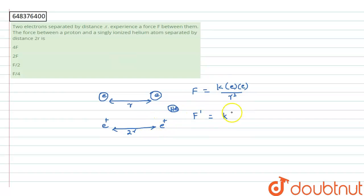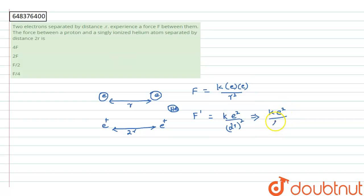F dash equals k times e squared, with the two-electron charge factor, divided by the distance 2r squared. Rearranging, this gives k e squared divided by 4r squared. Since k e squared over r squared equals the initial force F, we get F dash equals F divided by 4.